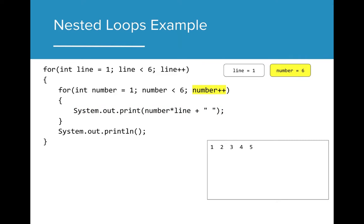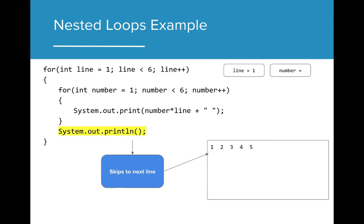Now, number gets incremented to 6. This is where our program gets interesting. Number now does not pass the boolean expression, and the inner for loop stops execution. Now, we exit that for loop and move to the code that directly follows the inner loop. In this case, we are adding a print line statement, so that the next line of code printed to the console is on a new line.